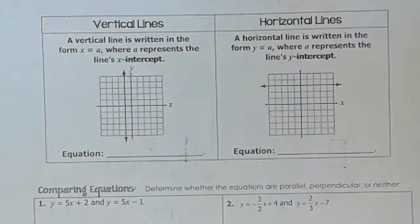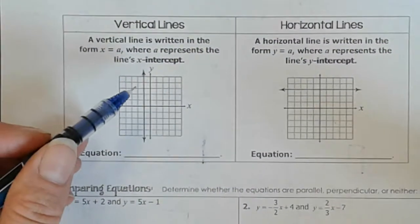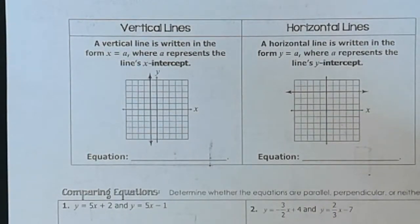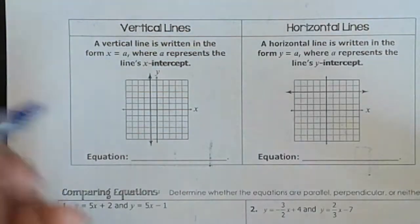So there are some special lines that are kind of hard to write in standard form or in slope-intercept form. I guess they work in standard form, but in the other forms it's kind of difficult. Because with a vertical line, well, it has an undefined slope. So how do I write that in slope-intercept form? I can't write y equals undefined. That doesn't make any sense.